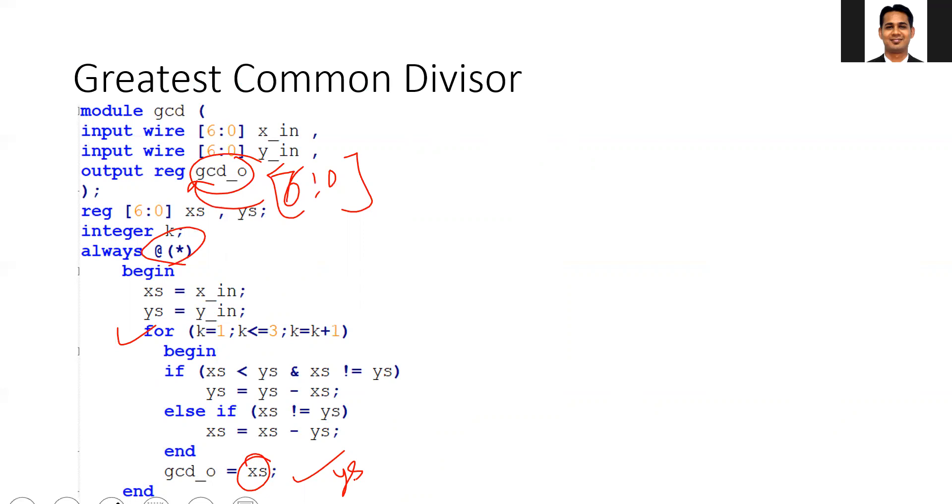The alternative option is to use the for loop but fix the number of iterations. I am running the for loop for three iterations. The body of work remains the same - I compare the two numbers, subtract the larger number from the smaller number, and replace the larger number with the difference. I'll stop after three iterations.